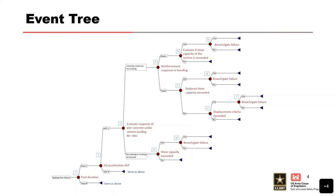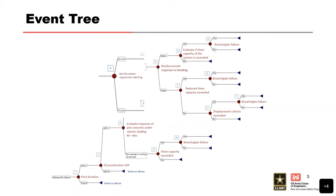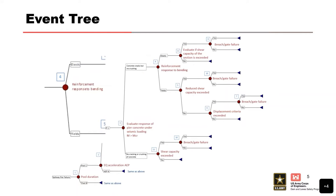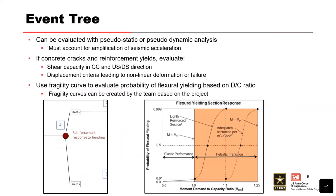We're considering upstream-downstream and cross-canyon, thinking ahead: what's the worst case, where's the most likely failure, where are you going to yield the steel? Going up the event tree where the concrete has cracked and the reinforcement responds to bending — whether that's elastic or whether the reinforcing steel has yielded. When looking at capacity of a member for bending, you can evaluate this using pseudo-static or pseudo-dynamic analysis.